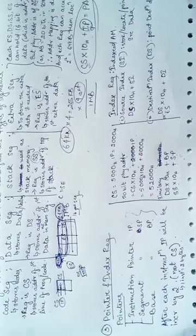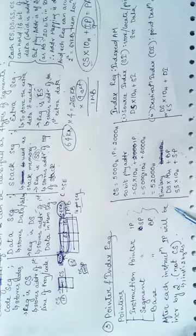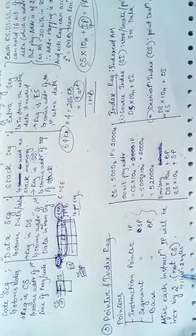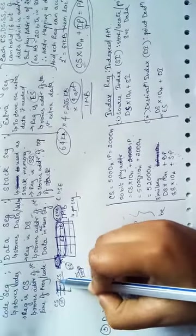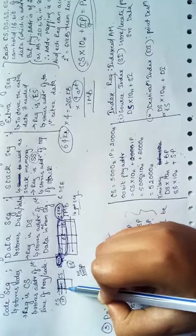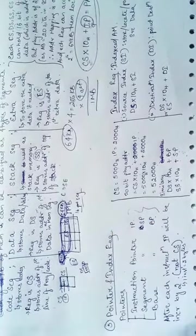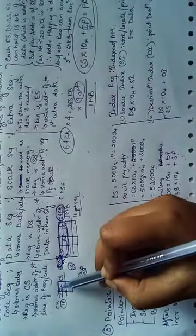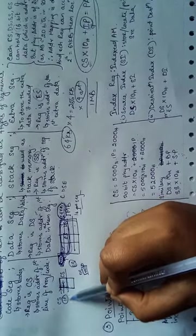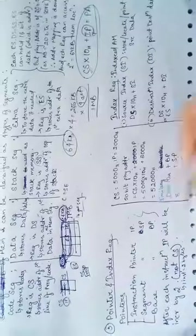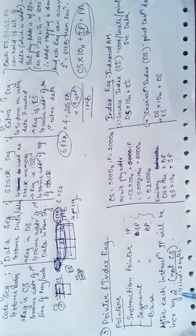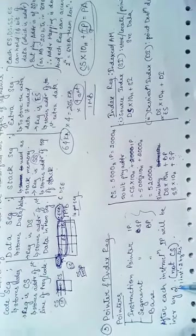After each instruction, IP will be increased by 2. CS won't be increased, we will stay in the same segment but we will move from line to line. If our IP is changed, we will increase after each instruction. After one bus cycle, it will be increased by 2 because one instruction is 2 bytes.